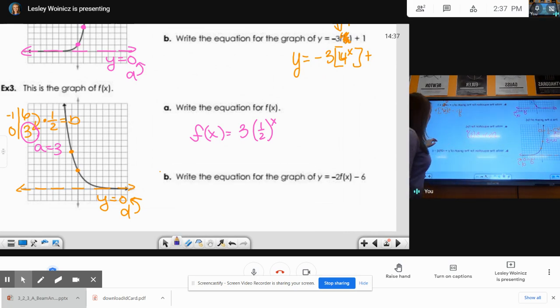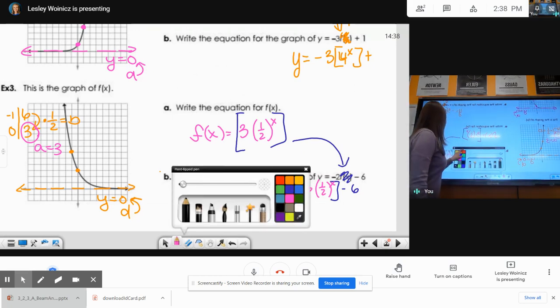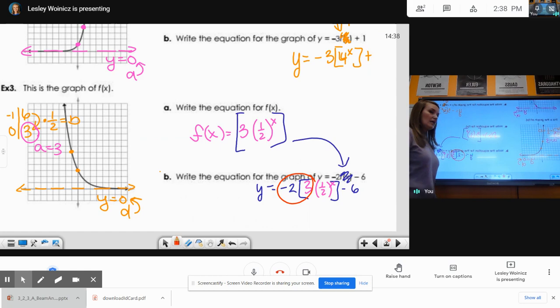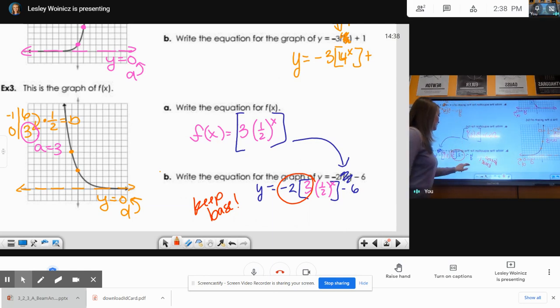Okay, now I'm going to plug that in wherever I see f of x. So it's going to look like y equals negative 2 times that whole thing, take away 6. So that whole thing goes in there. It's going to be 3 times 1 half to the x. When I simplify this, I multiply my coefficients, the negative 2 and the 3. I do not multiply the negative 2 with my base. I keep the base. So it's going to be y equals negative 6 times 1 half to the x minus 6.